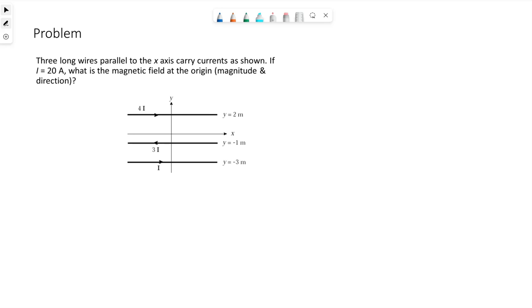We have an example problem here. It tells us three long wires parallel to the x-axis carry currents as shown. If I is 20 amps, what is the magnetic field at the origin in terms of magnitude and direction?